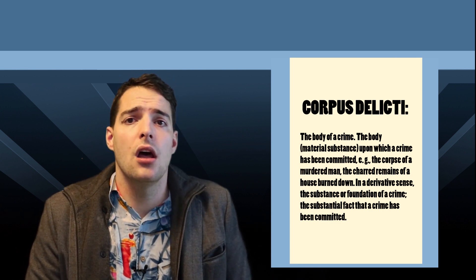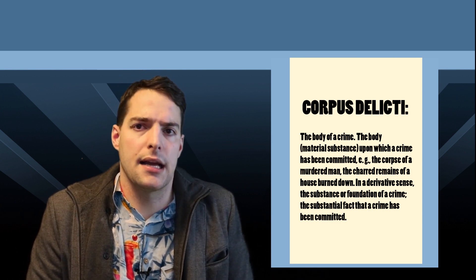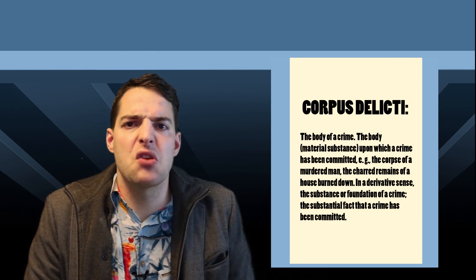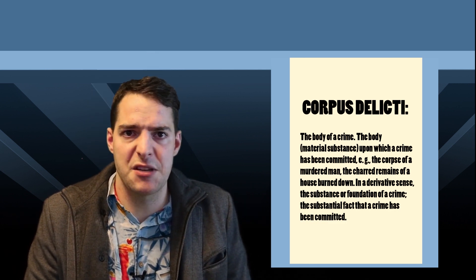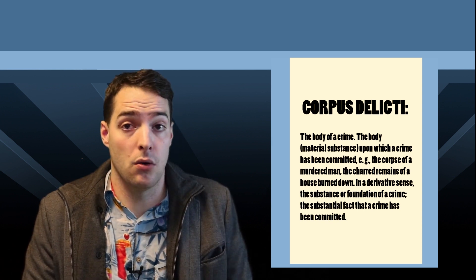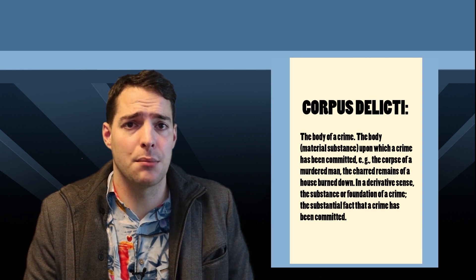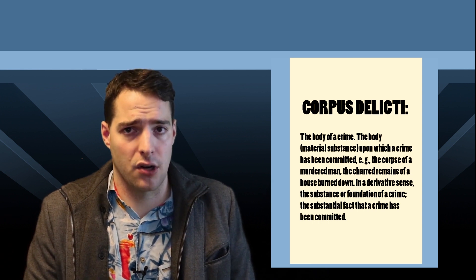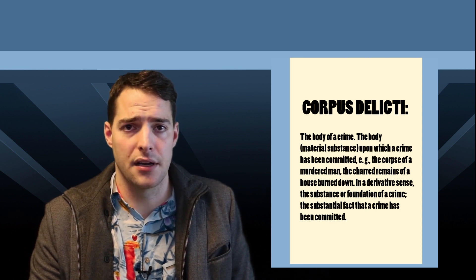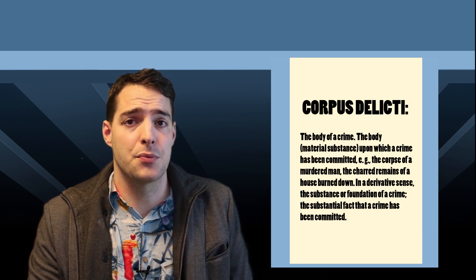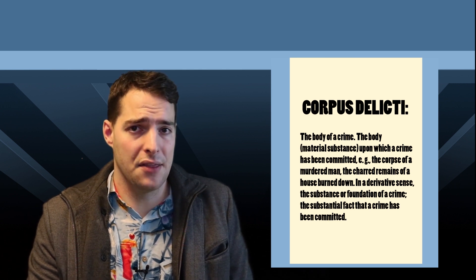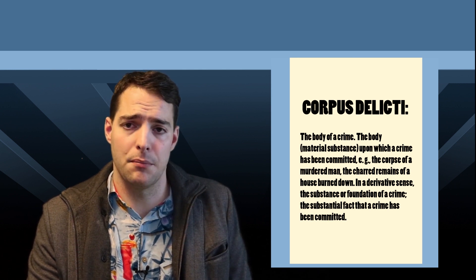A lot of people misread this and think crime requires corpus delicti — which is generally true. And they think this definition requires a body upon which a crime has been committed, meaning there has to be a victim. No. It means that to convict someone, there has to be evidence of a crime. It doesn't require a person and it doesn't require physical injury. In fact, in many cases, without a physical victim, criminal acts are considered a crime against society, and therefore the government becomes the victim.